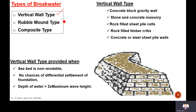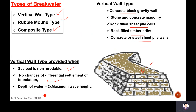Types of breakwater: it can be a vertical wall type, rubble mound type, or composite type, depending on the material. In the vertical wall type, the material used is concrete block — like gravity walls we construct — it can be concrete masonry, stone masonry, or brick masonry. Rock fill sheet piles, timber piles, and steel sheet piles can also be used. The vertical wall type is provided where the seabed is non-erodible with no chance of settlement, and the depth of water is more than two times the maximum wave height.